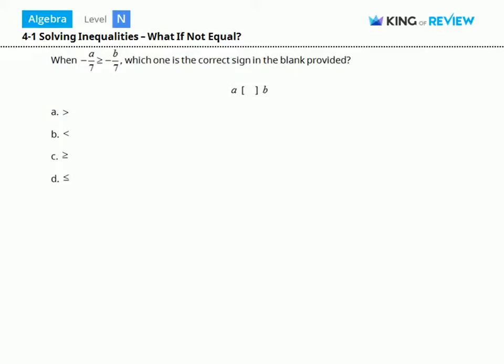Hi, this is King of Review. When negative a over 7 is greater than or equal to negative b over 7, which one is the correct sign in the blank provided?